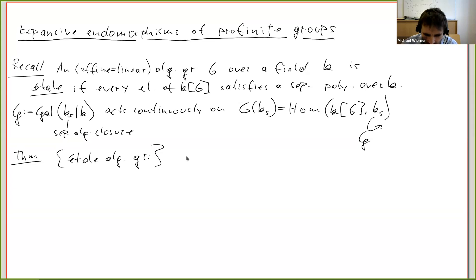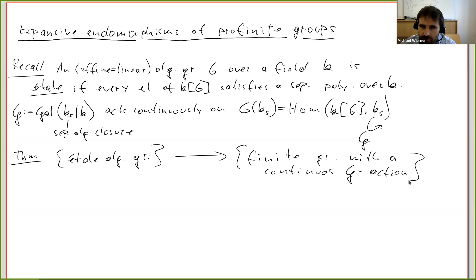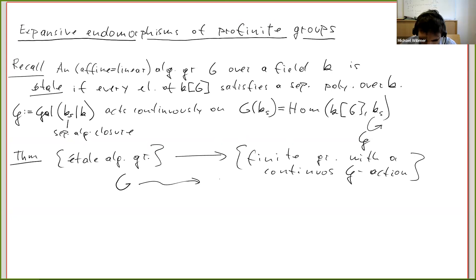A very classical result — maybe attributable to Grothendieck and others — is that étale algebraic groups are equivalent to finite groups with a continuous Galois action. The equivalence is given by this construction where an étale algebraic group is assigned its K_s-points, which form a finite group with a continuous action. This is an equivalence of categories.